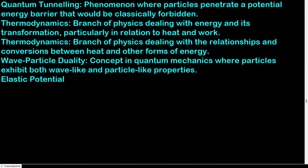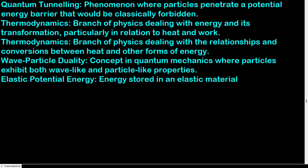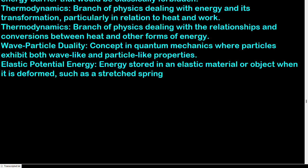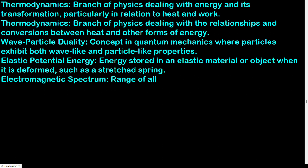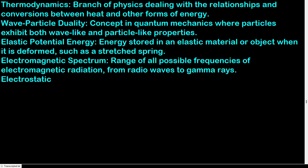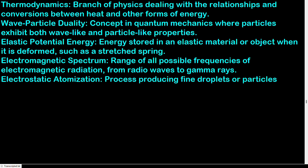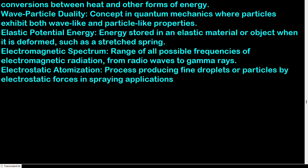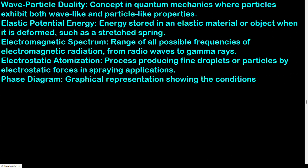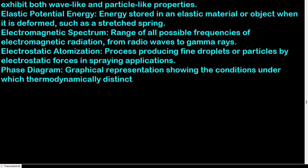Elastic potential energy: energy stored in an elastic material when it is deformed, such as a stretched spring. Electromagnetic spectrum: range of all possible frequencies of electromagnetic radiation, from radio waves to gamma rays. Electrostatic atomization: process producing fine droplets or particles by electrostatic forces in spraying applications. Phase diagram: graphical representation showing the conditions under which thermodynamically distinct phases can co-exist.